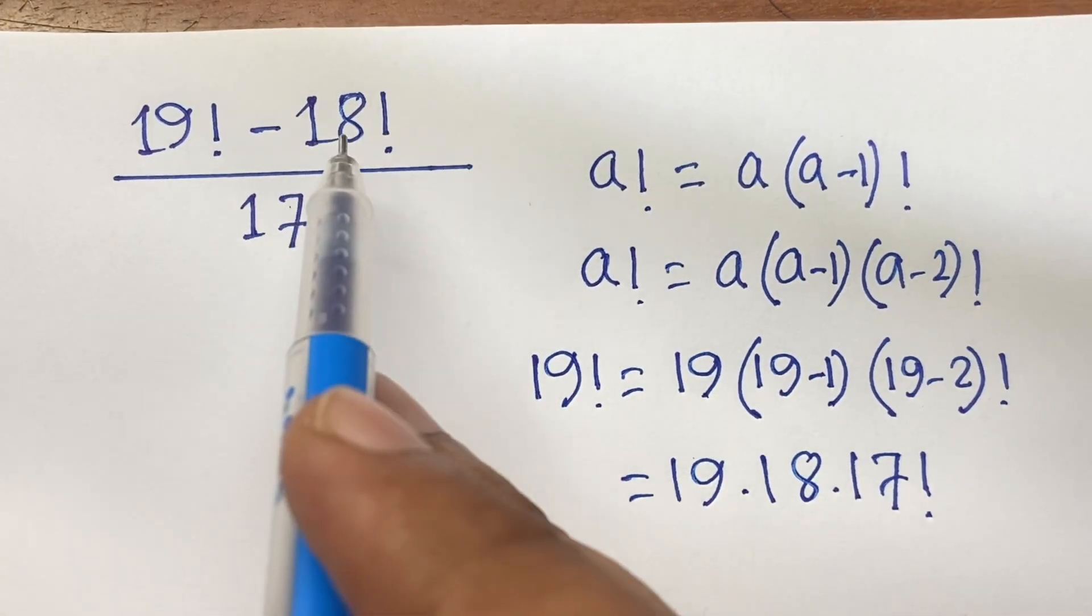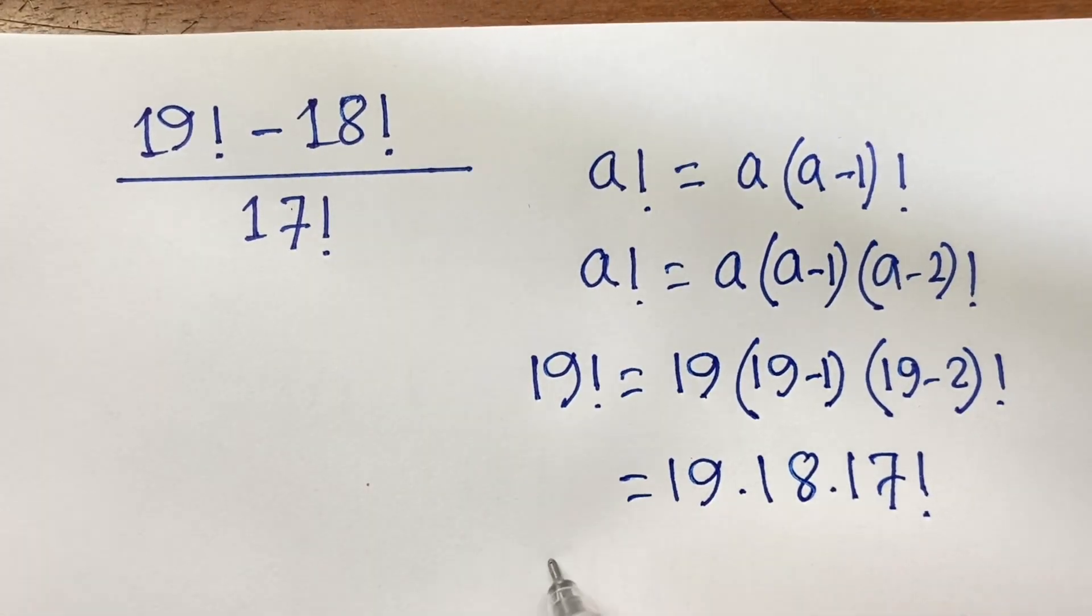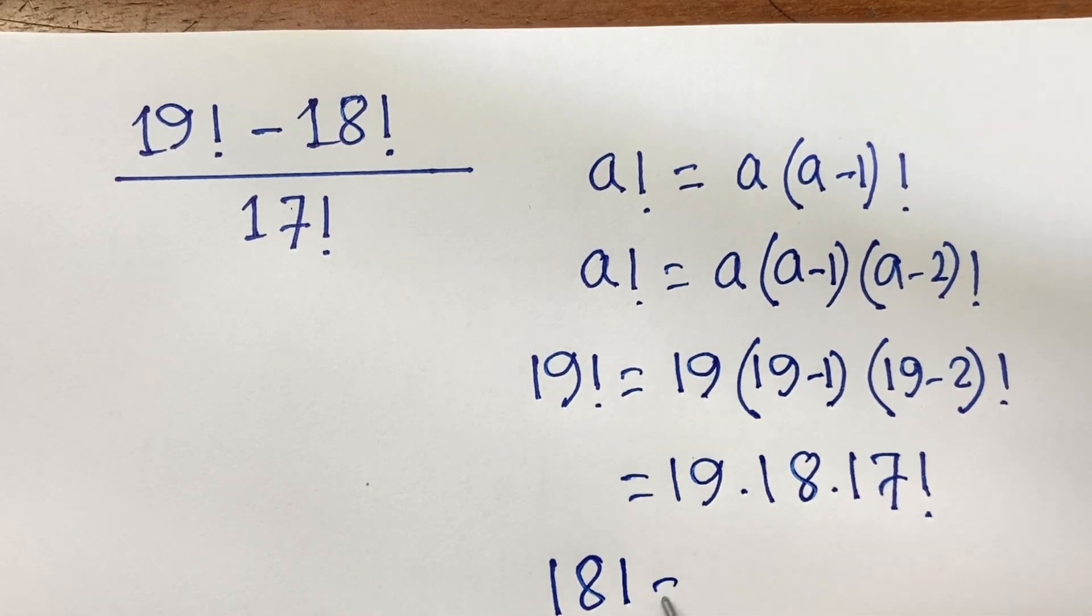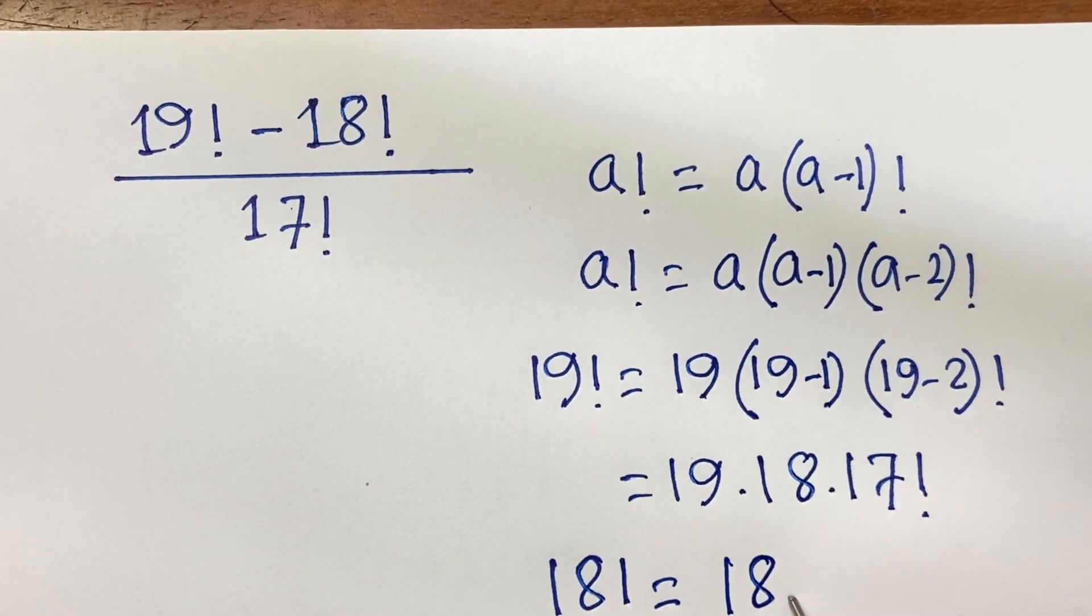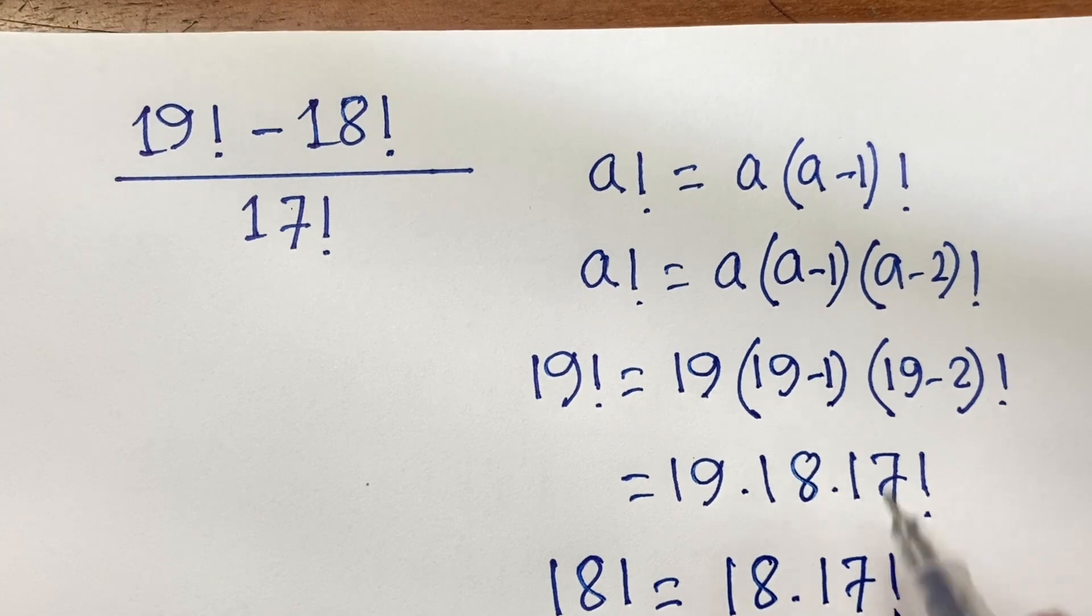And here is 18 factorial. So I can say 18 factorial equals 18 times 17 factorial. I follow these rules.